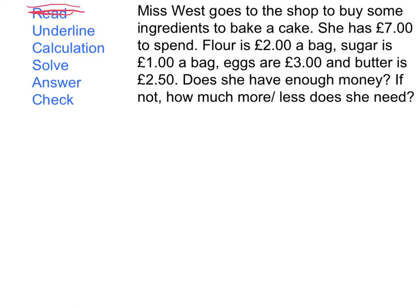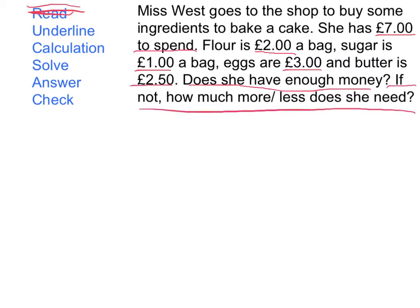Now we need to underline the key information. It's not important that Miss West is a person who goes to the shop or that she's baking a cake, but it's very important that she has seven pounds to spend. It's also really important that we know she's buying something that's two pounds, something that's one pound, something that's three pounds, and something that is two pound fifty. It's also important that we underline 'does she have enough money and if not how much more or less does she need,' because this is what the question is actually asking.